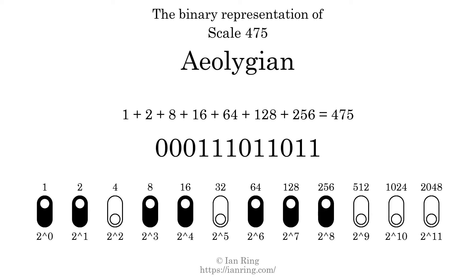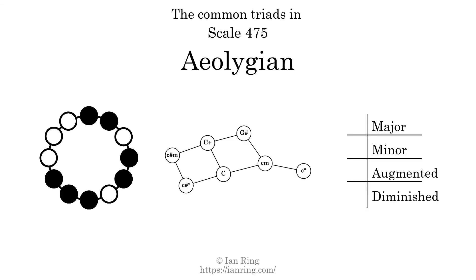The scale number is 0, 0, 0, 1, 1, 1, 0, 1, 1, 0, 1, 1, 0, 1, 1. Here are the common triads present in this scale. The diagram in the center is a graph of parsimonious voice leading between triads.